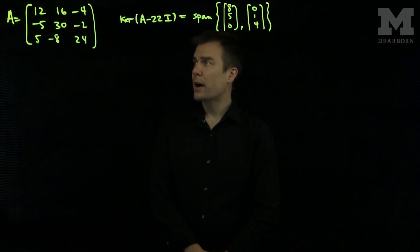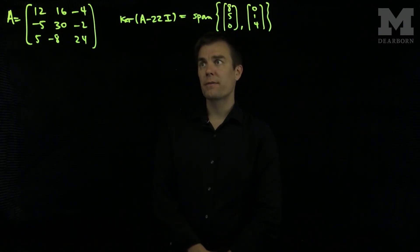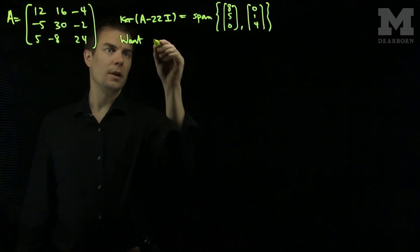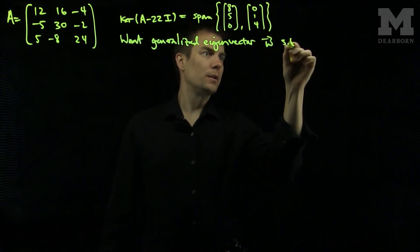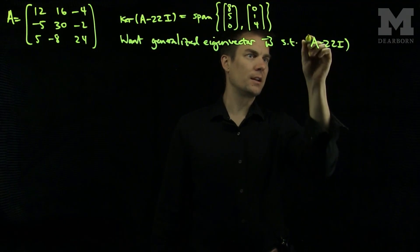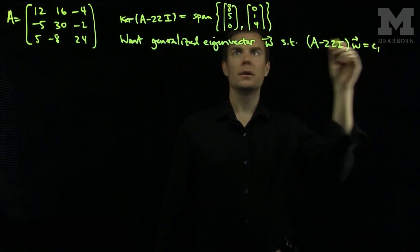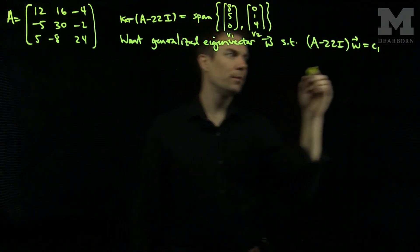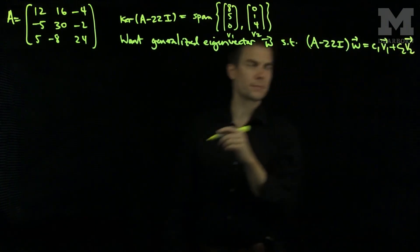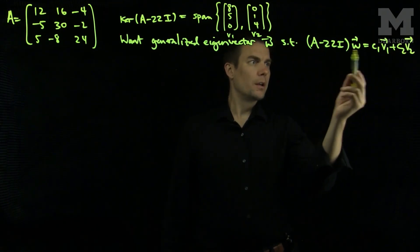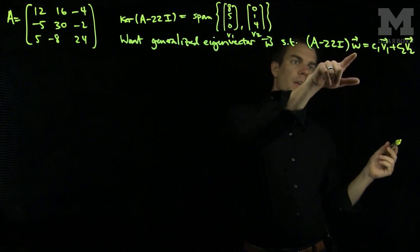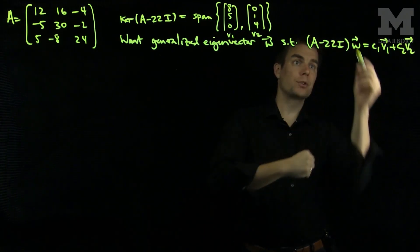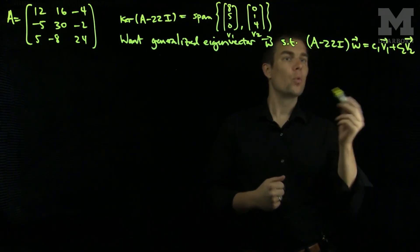Welcome back, students. We're in the process of finding the Jordan canonical form of matrix A. Previously we found that the kernel of A minus 22 times the identity is the span of V1 and V2. We want a generalized eigenvector W such that (A - 22I)W = C1*V1 + C2*V2. We know the kernel of (A - 22I)^2 is the entire space, so there is one more vector outside the original kernel giving us a full basis.